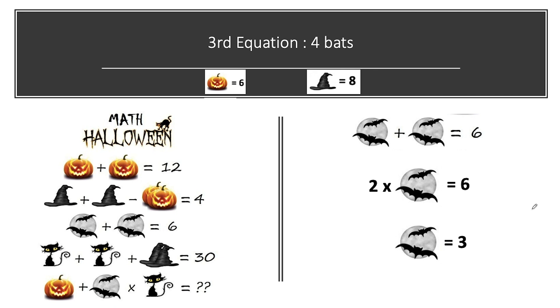Now jumping on to our third equation. In the third equation we have 2 bats on 1 moon and another 2 bats on another moon and their sum is equal to 6. So 2 into 1 moon with 2 bats is equal to 6. So 2 bats value comes out to be 6 divided by 2 that is equal to 3.